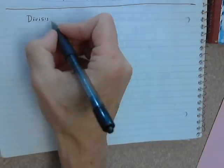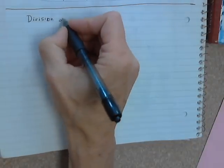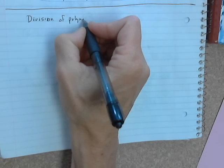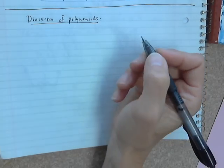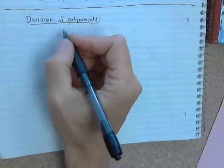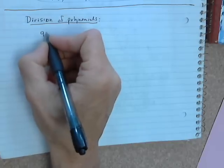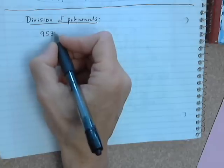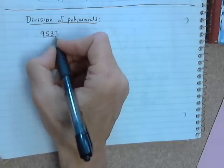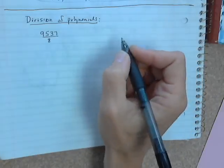Today we're going to talk about division of polynomials. First of all, I'm going to take you back to elementary school when you learned how to divide numbers without a calculator. For example, if you wanted to divide 9,537 by 8 with no calculator,